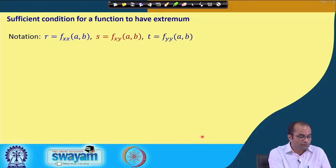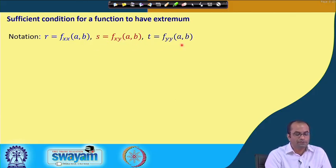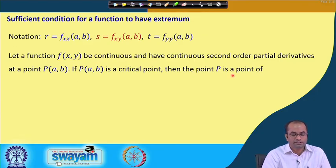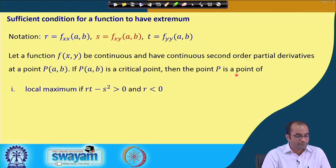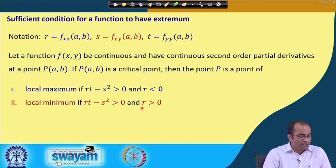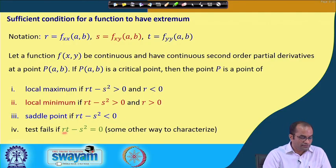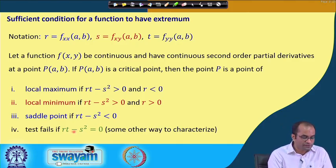Now mathematically we identify all these points using second order derivatives — the sufficient condition. For simplicity, we use the notation: r = f_xx at (a, b), s = the mixed derivative f_xy at that point, and t = f_yy at (a, b). If (a, b) is a critical point, there is a local maximum if rt - s² > 0 and r < 0; a local minimum if rt - s² > 0 and r > 0; a saddle point if rt - s² < 0; and the test fails if rt - s² = 0.